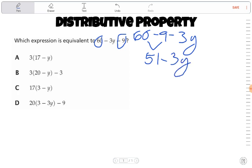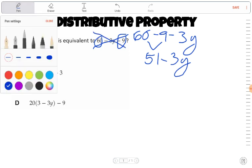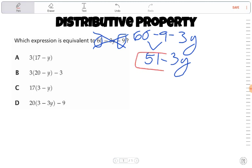So this is already, I'm done with that. I'm going to focus on 51 minus 3y, because that is much simpler to deal with.